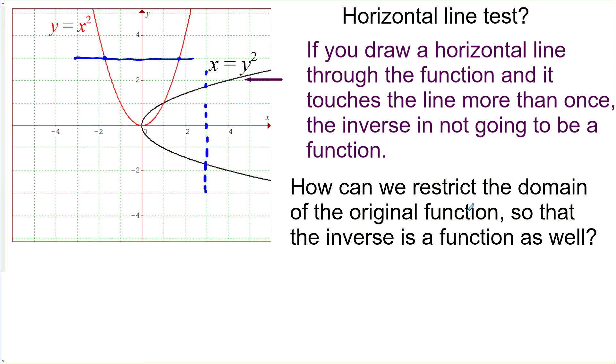Now how can we restrict the domain of the original function so that the inverse is a function as well? So let's come up with a few answers. Answer number one, we could say that x just needs to be greater than zero. And that would just take into account this part here, and so the inverse would just be like that. And the inverse passes the vertical line test. And this little portion of the original passes the horizontal line test.